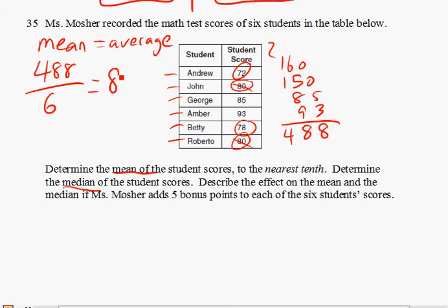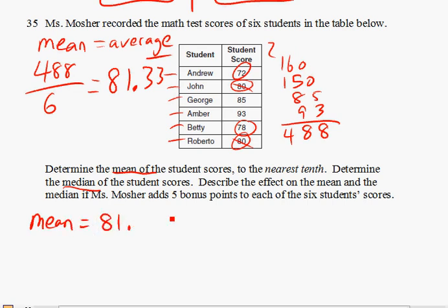The average comes out to be around 81.33 — with a repeating bar on top. And this says round it off to the nearest tenth, so the mean equals 81.3.